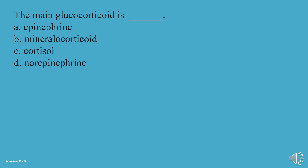The main glucocorticoid is what? A, Epinephrine. B, Mineralocorticoid. C, Cortisol. D, Norepinephrine. The answer is C, Cortisol.